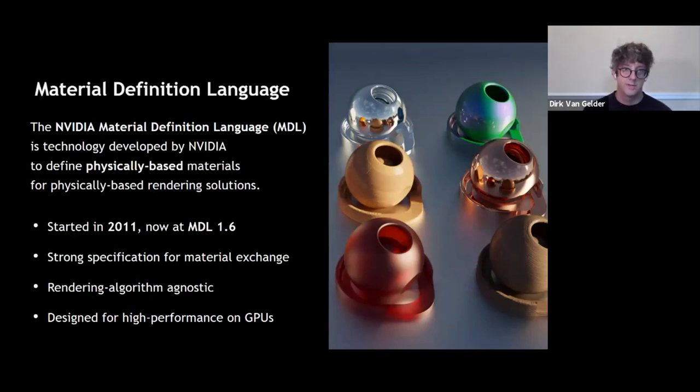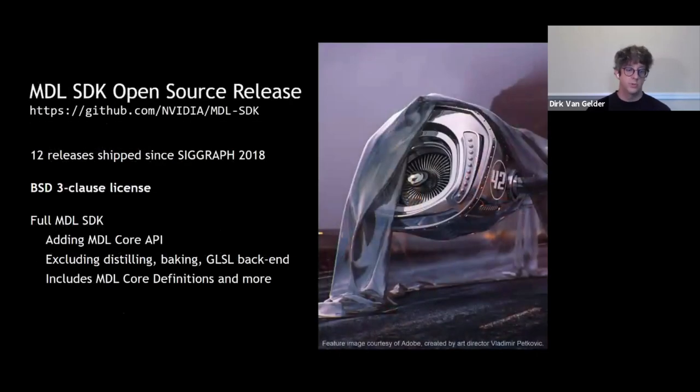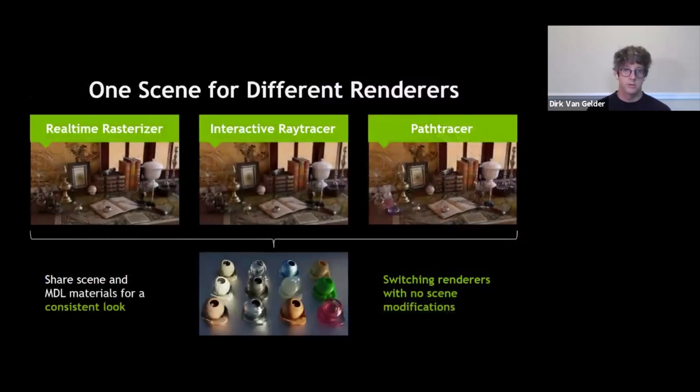I told you I was going to come back to the material definition language. So MDL is a language which describes how light interacts with surfaces. It does that with energy conserving BSDFs and very well understood physically based properties so that we can define physically based materials and really understand how light interacts with them. It was started in 2011 but has now become open source as of 2018 with a BSD license.